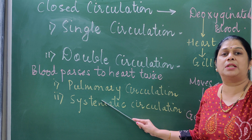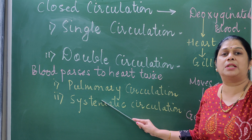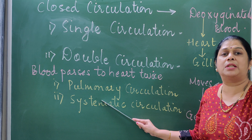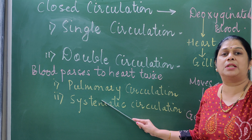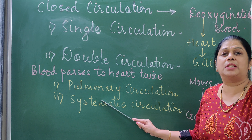This four-chambered heart divides our heart into two equal halves: the right side and the left side. So two streams of blood will simultaneously flow, and the blood flow will take place twice. Such type of circulation is called double circulation. This double circulation is further divided into pulmonary circulation and systemic circulation.